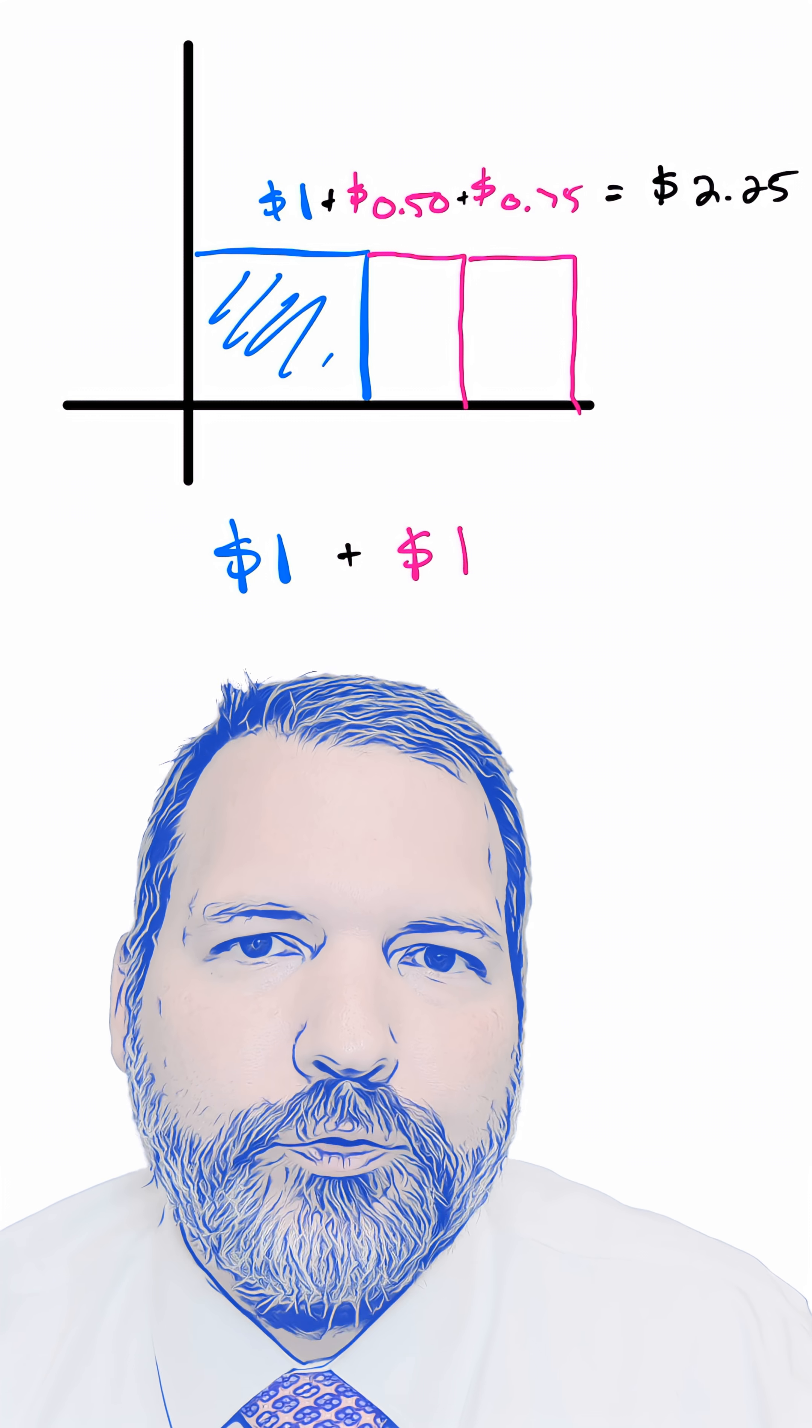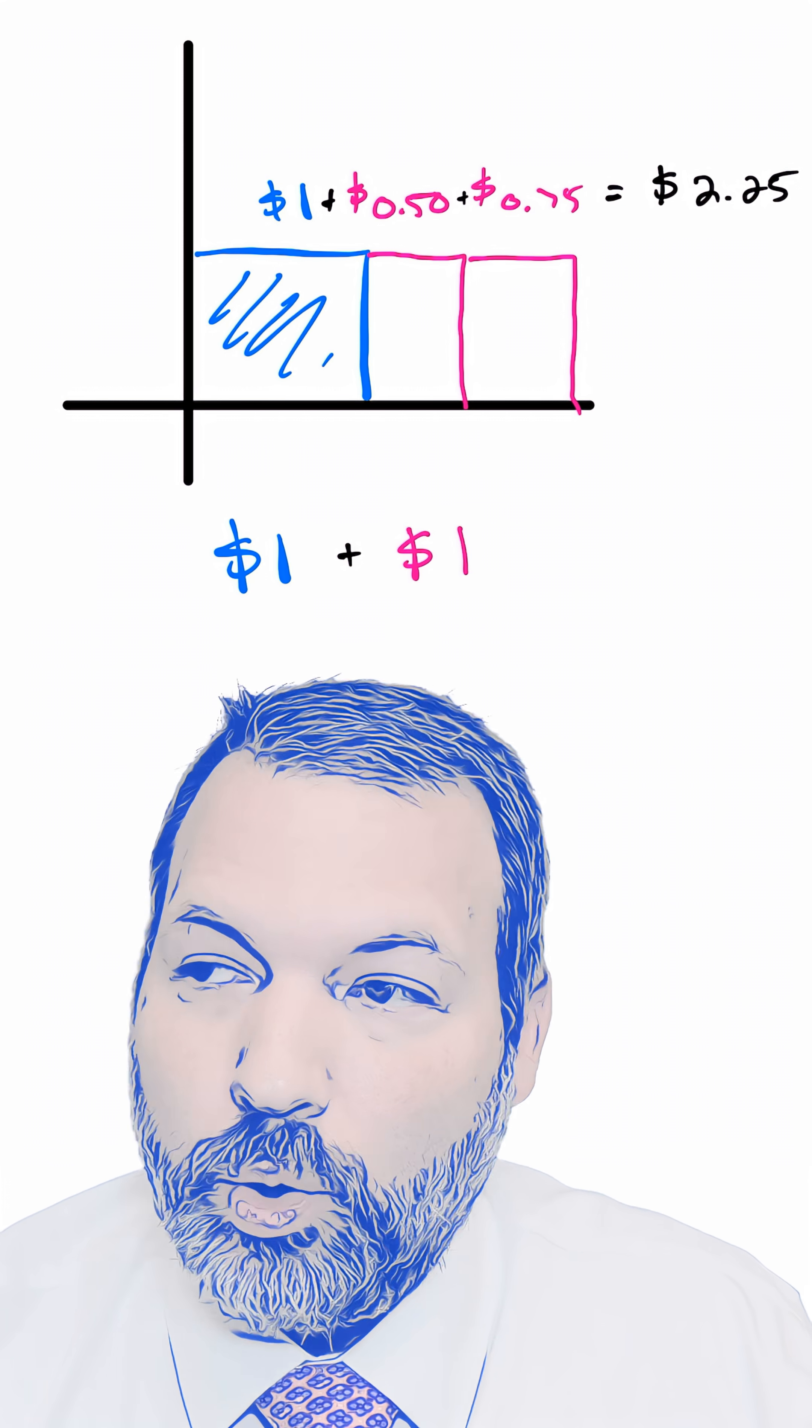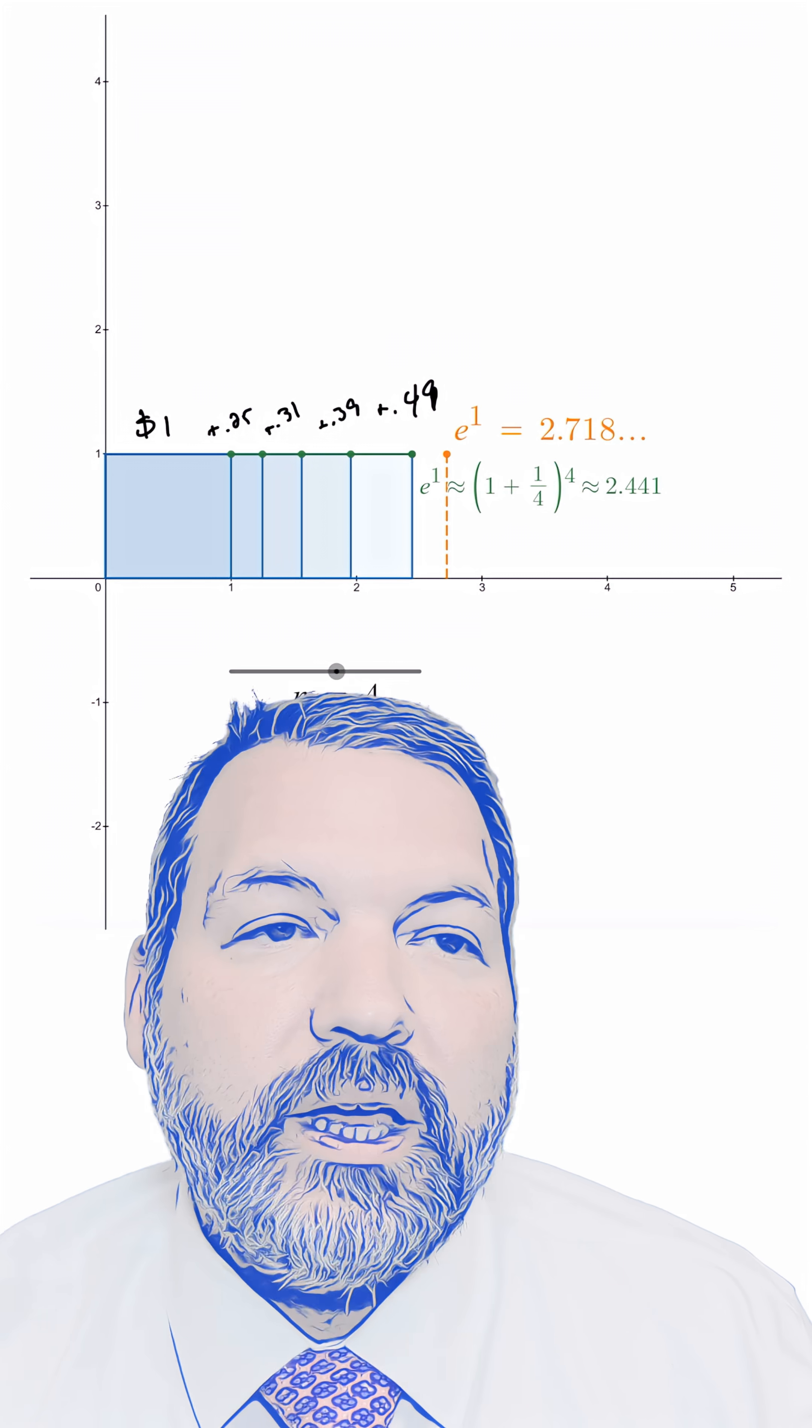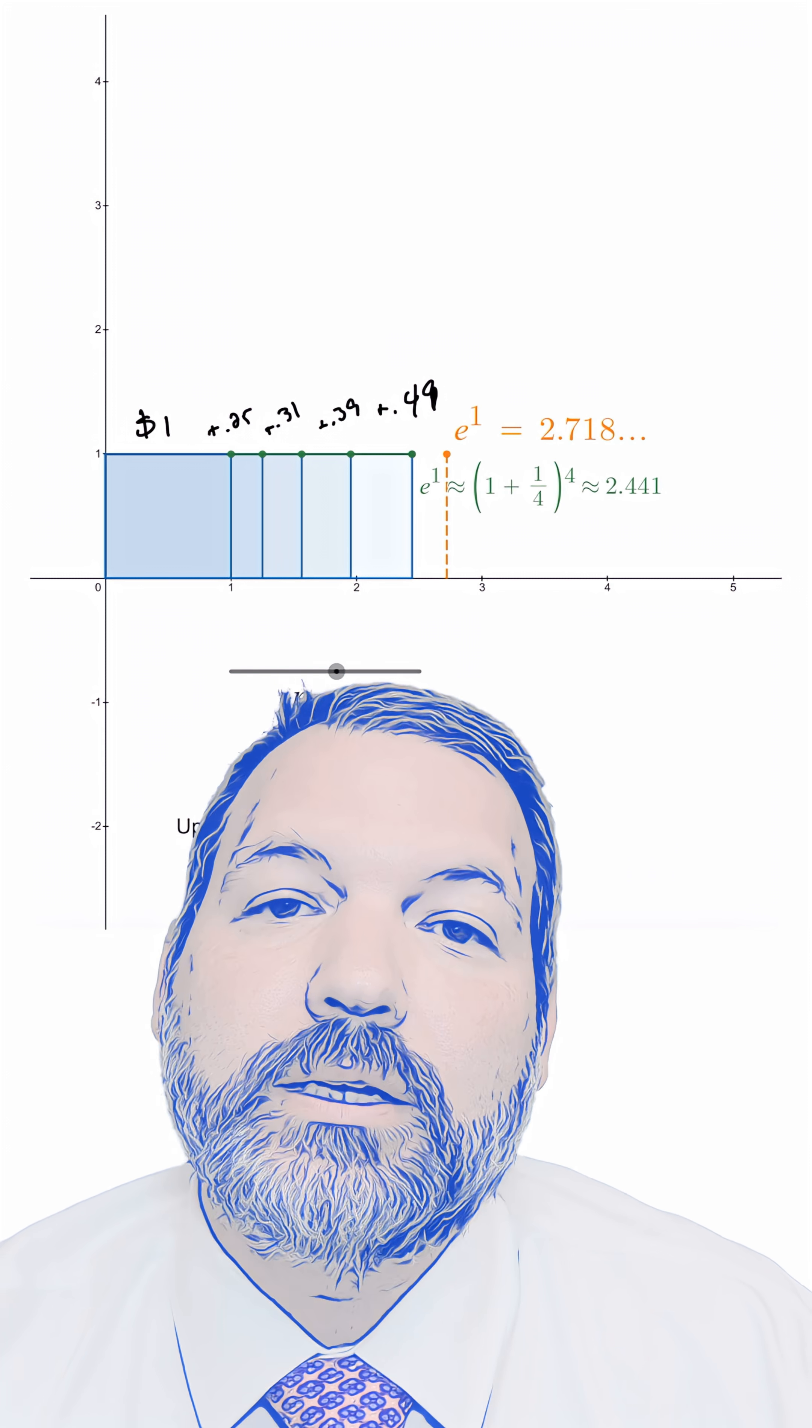My goodness, this is like free money. What if we checked in three times a year? What if we checked in 12 times a year? It's this idea that lies behind the mathematical constant E.